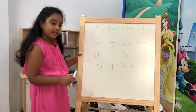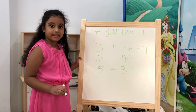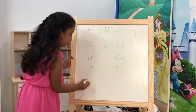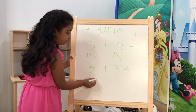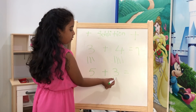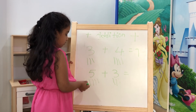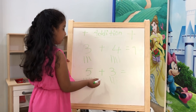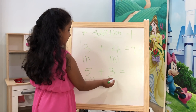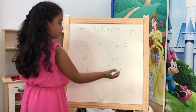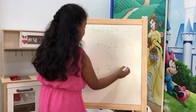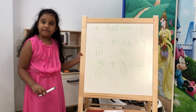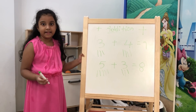Next is five plus three. One, two, three, four, five — one, two, three — one, two, three, four, five, six, seven, eight. Five plus three is eight.